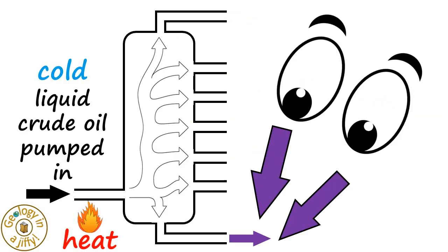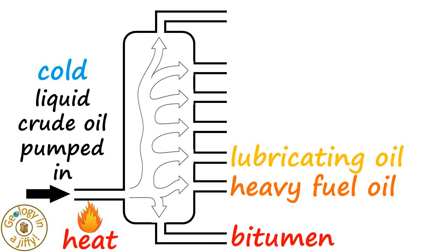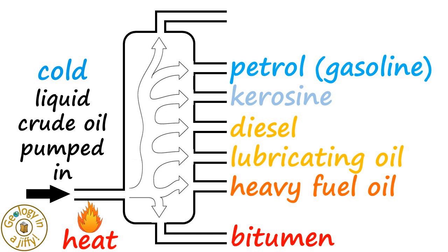Which, starting at the base, are bitumen, heavy fuel oil, lubricating oil, diesel, kerosene, petrol, known as gasoline, and finally, refinery gases.